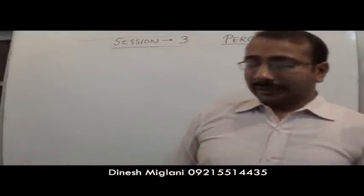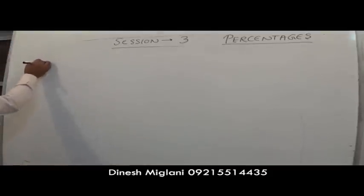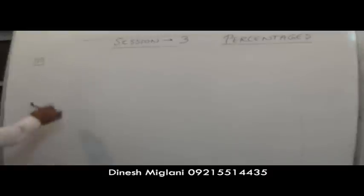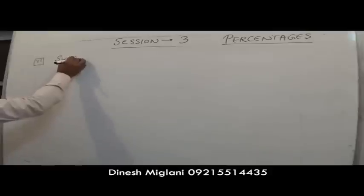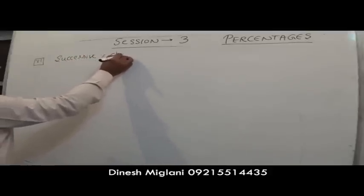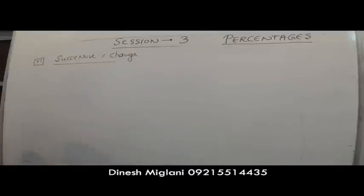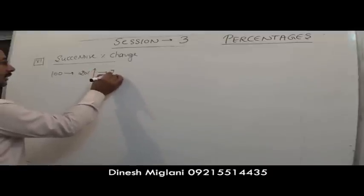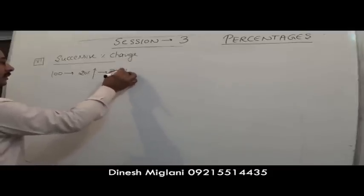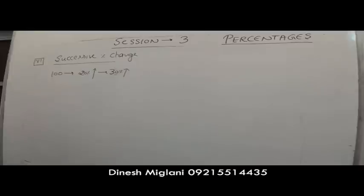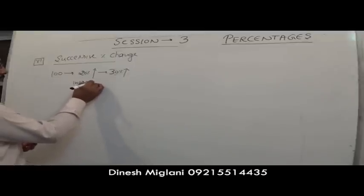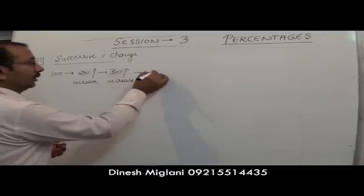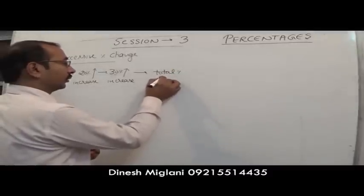Next is the concept of successive percentage change and its application. Suppose a number is 100. It is first increased by 20%, then further increased by 30%. We need to find the total percentage increase.